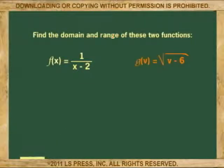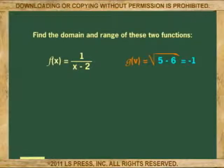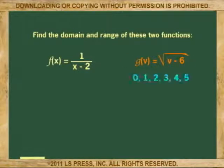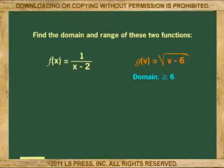Now, for this other example, any time the square root of a function is negative, the domain would not be a natural domain because the square root of a negative number is also undefined. Because the function includes v minus 6, any number less than 6 would make the radical negative. So, the domain here is any real number 6 or greater.